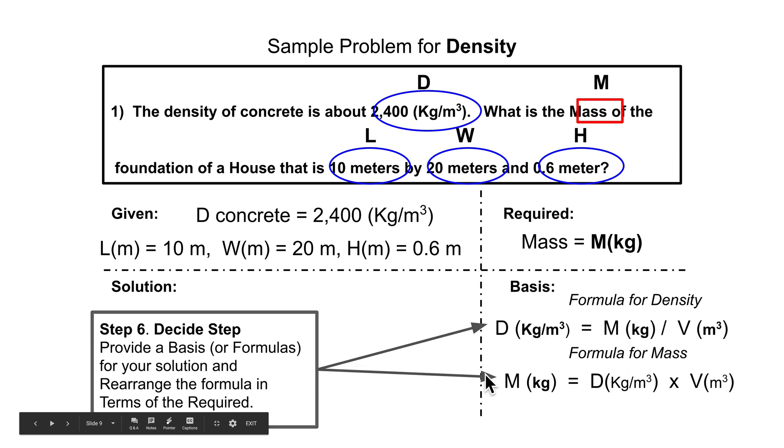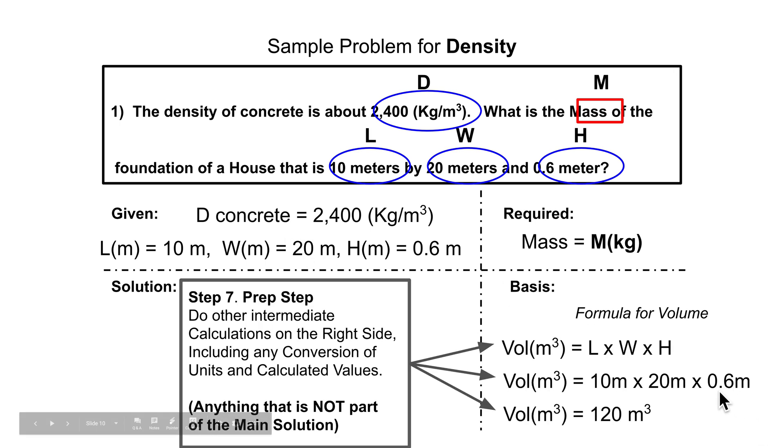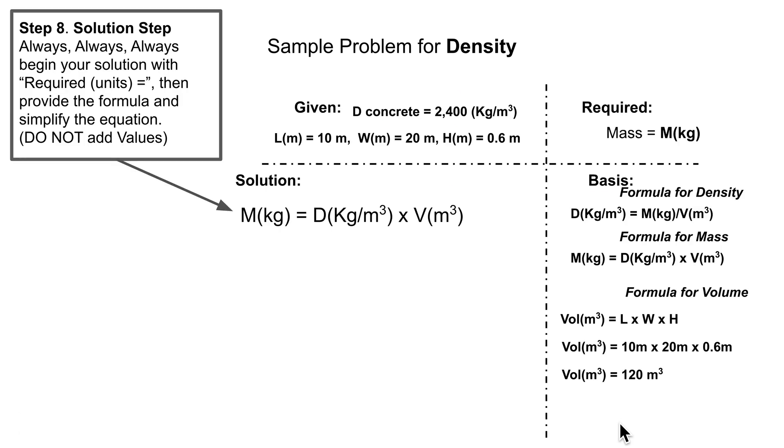Then, by examination, we look and we see that yes, we have density here, but we don't have the volume. And that tells us that we have to compute for the volume. Any side computations you can also do in the basis. So the formula for volume is length times width times height, and we compute it here. Now we are ready to solve the main part of the problem.